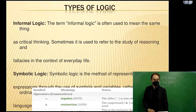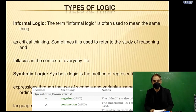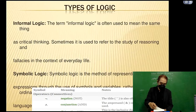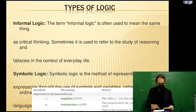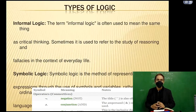Informal logic is often used to mean the same thing as critical thinking. Sometimes it is used to refer to the study of reasoning and fallacies in the context of everyday life. Symbolic logic is the method of representing logical expressions through the use of symbols and variables.